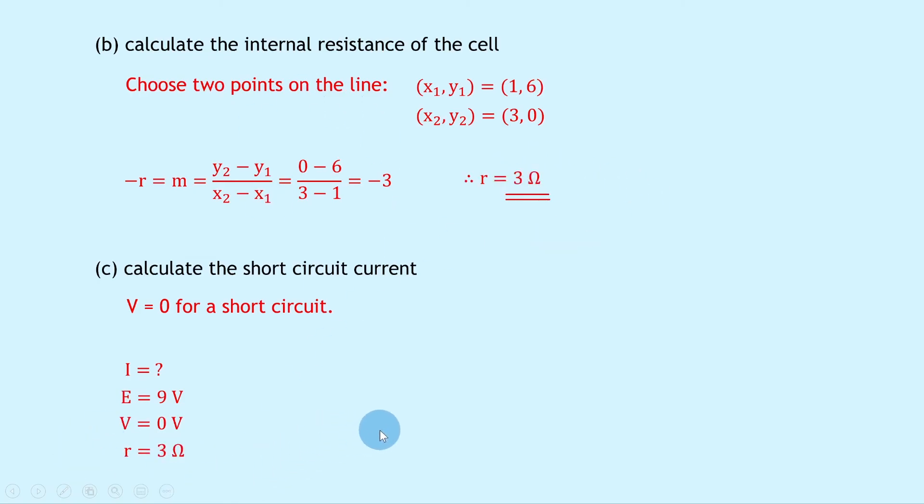So writing down our equation, we have e equals v plus ir, but remember this will simplify to essentially just e equals ir because this is zero. So substituting in the numbers, we get nine equals zero plus three i. Swapping the sides now, we get three i equals nine, and dividing both sides by three to get i on its own gives us i equals three amps.